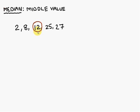Median is nothing but a middle value. Now we are going to find out the median for 2, 8, 12, 25 and 27 numbers.